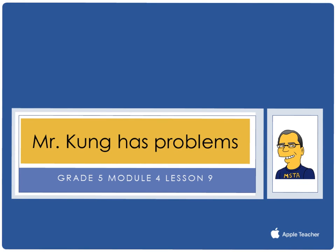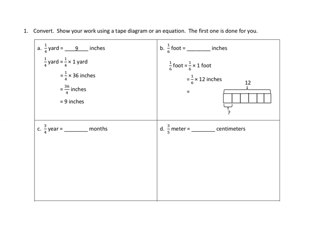Hello and welcome to another episode of Mr. Kung Has Problems. Tonight in grade five, in module four, we are working on lesson number nine, and that means that we are finding a fraction of a measurement and solving word problems. So let's take a look at three problems from tonight's homework.